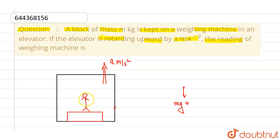So pseudo force will be mass of this object into acceleration of the frame a and that should act in opposite direction. That's why I'm adding here. So this will be ma.